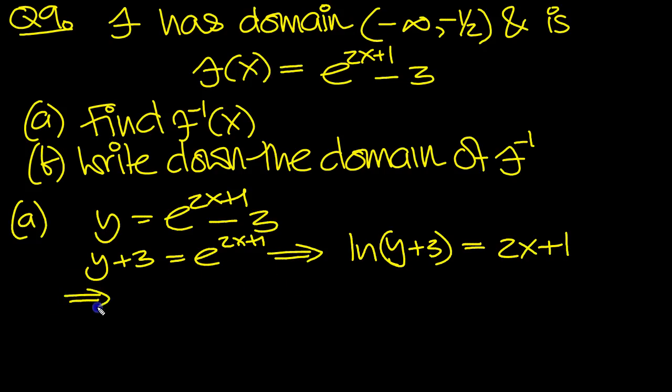So that tells us then that 2x, reading from right to left, move the 1 over. And then finally we can now write x in terms of y. It's going to be a half. Divide by 2 all the way through.